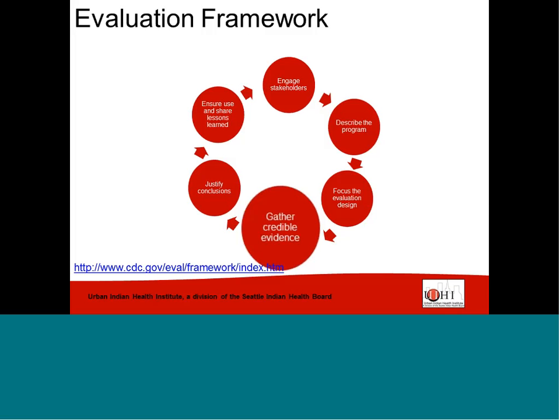By step four, we have already defined the different aspects of our program, and have an understanding of what each element is intended to achieve based on the logic model we have developed to describe our program. We have also identified the type of evaluation and have developed questions to help us understand if the program is working, why or why not it is working, and to measure specific indicators that are appropriate and relevant. Data collection is the stage of the evaluation process where we gather the information necessary to answer our evaluation questions.